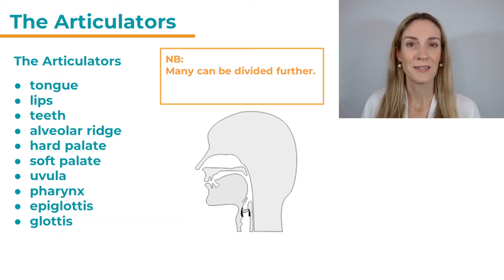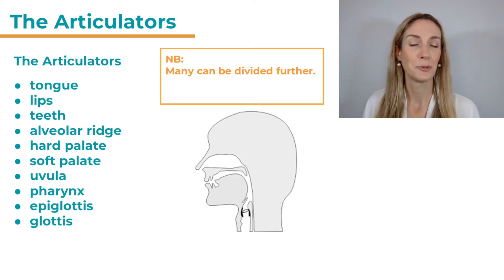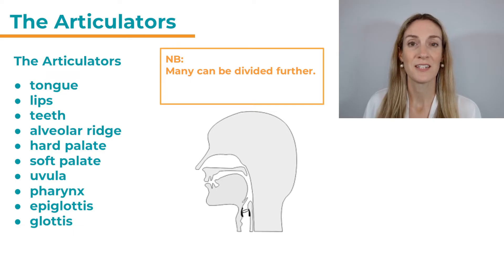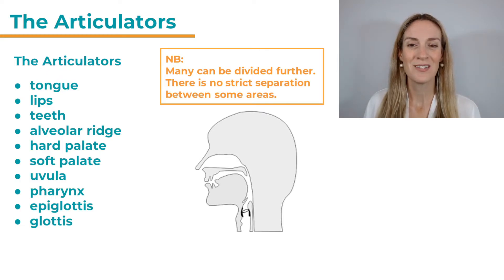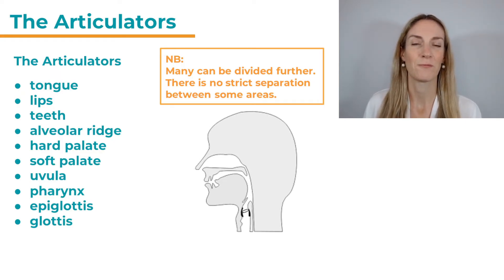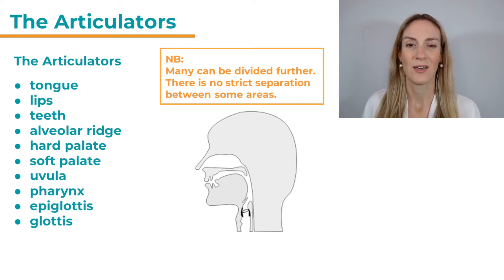A couple of things to remember: many of these articulators can be divided further. The tongue, for example, is divided into the tip or front, the blade or middle bit, and the root or back of the tongue. Also, there is no strict separation between some of these areas — it's not like there's a definite point where the tip ends and the blade starts, or where the soft palate ends and the hard palate starts. Those transitions are a little bit fluid.